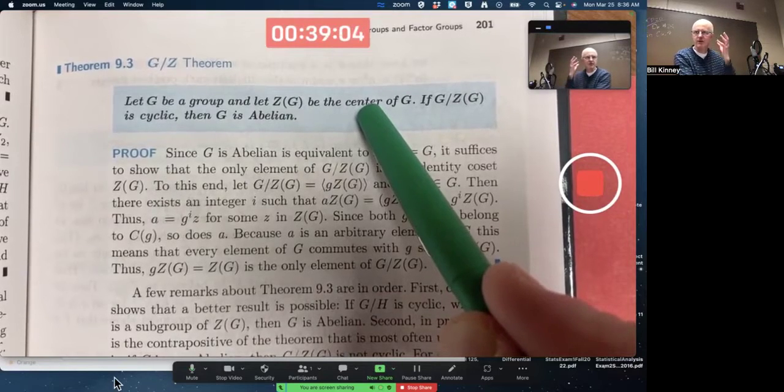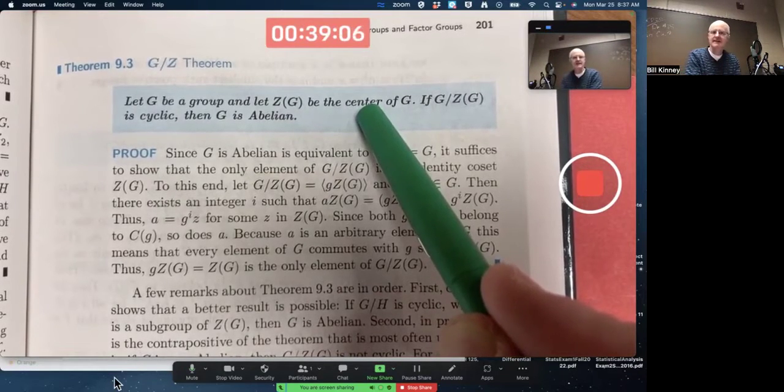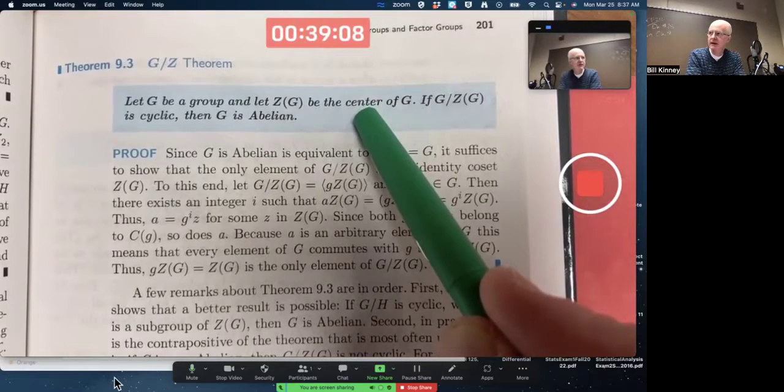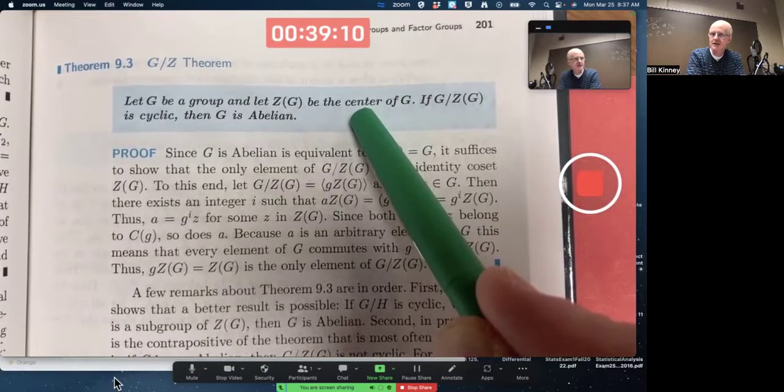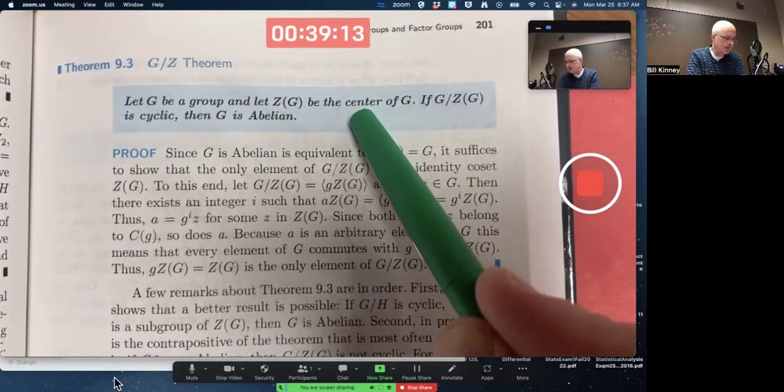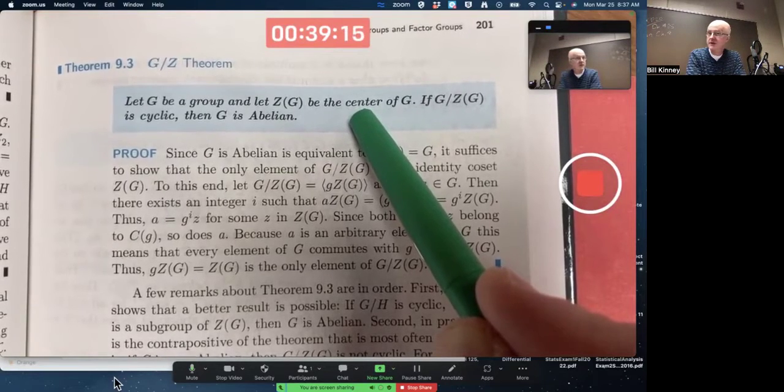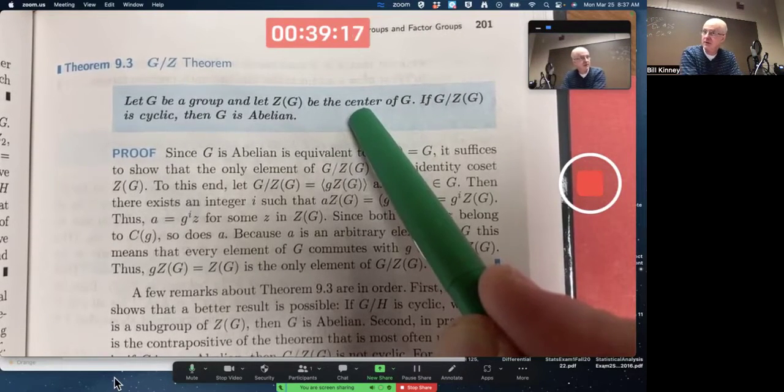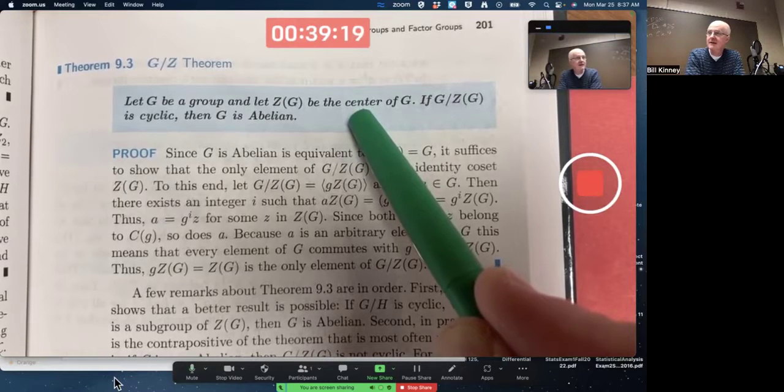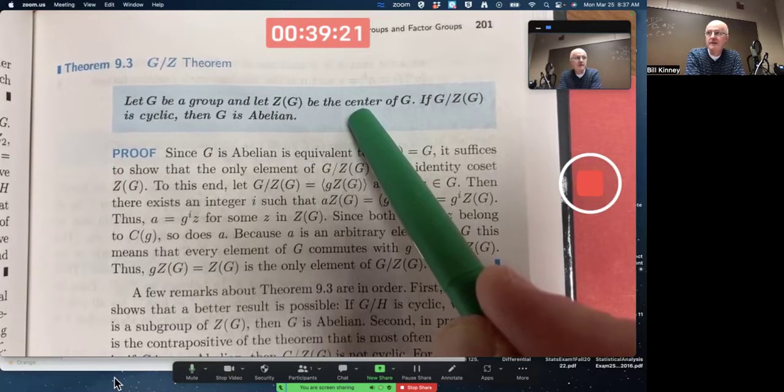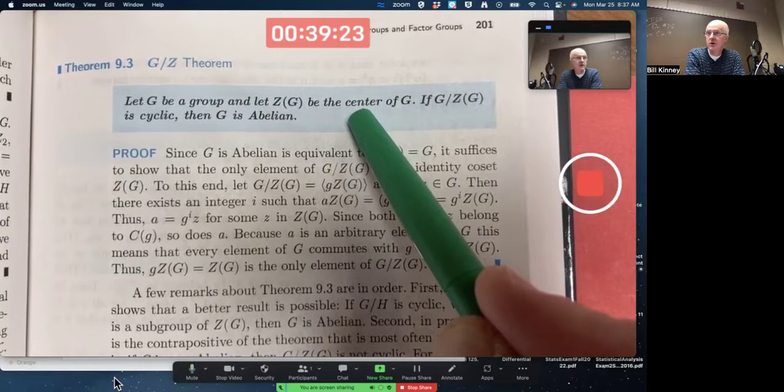As you read, remind yourself what things mean. That's the set of all things in G that commute with everything else in G. All the elements of G that commute with every other element. It is a normal subgroup. That was an example earlier in chapter 9. Given any group, the center of that group will be a normal subgroup.